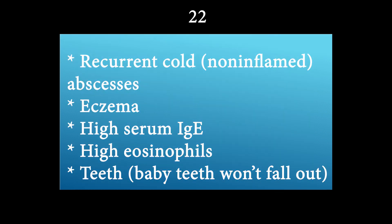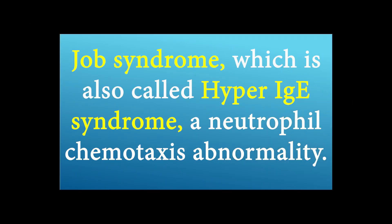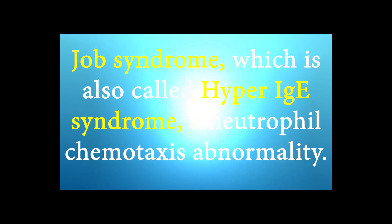What is the diagnosis of these presentations? Recurrent cold, non-inflamed abscesses (mostly staph), dermatologic findings such as eczema, high serum IgE, high eosinophils, and baby teeth that won't fall out and become adult teeth. The diagnosis is Job syndrome, also called hyper-IgE syndrome — a neutrophil chemotaxis abnormality.